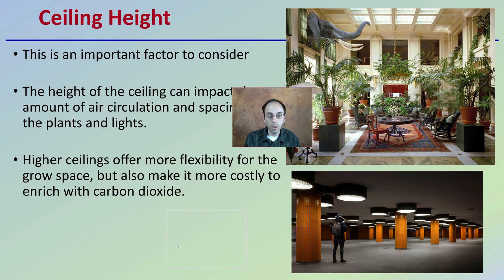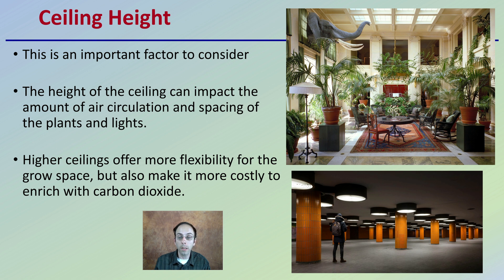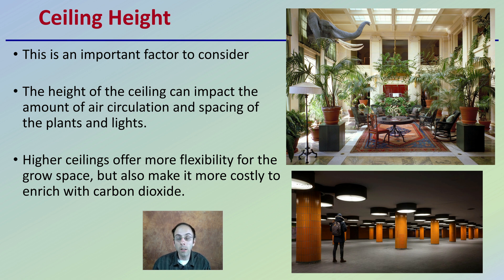And lastly, ceiling height — an important factor to consider. The height of the ceiling can impact the amount of air circulation and spacing of plants and lights. Higher ceilings offer more flexibility for the growing space, but also make it more costly to enrich with carbon dioxide. Take into consideration these pros and cons with your grow space and definitely have a plan for each of these particular environmental factors mentioned here.